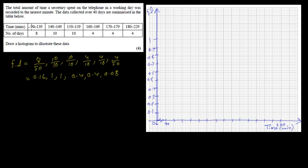So 90 to 139 means 89.5 to 139.5 — it doesn't have to be that accurate. So before 90, the boundaries are 89.5 and 139.5, covering approximately 90, 100, 110, 120, 130, 140 on the axis. 139.5 is going to be near to 140. The height of this bar is going to be 0.16 — between 0.1 and 0.2, roughly here.